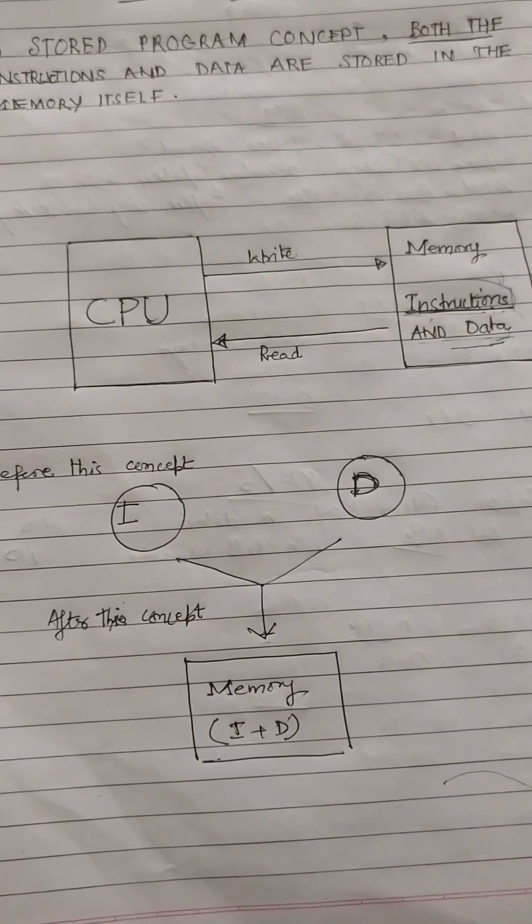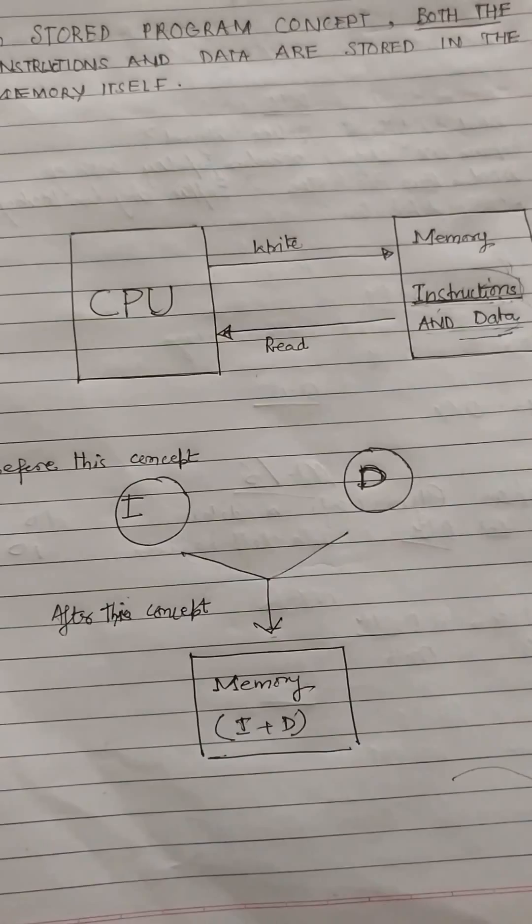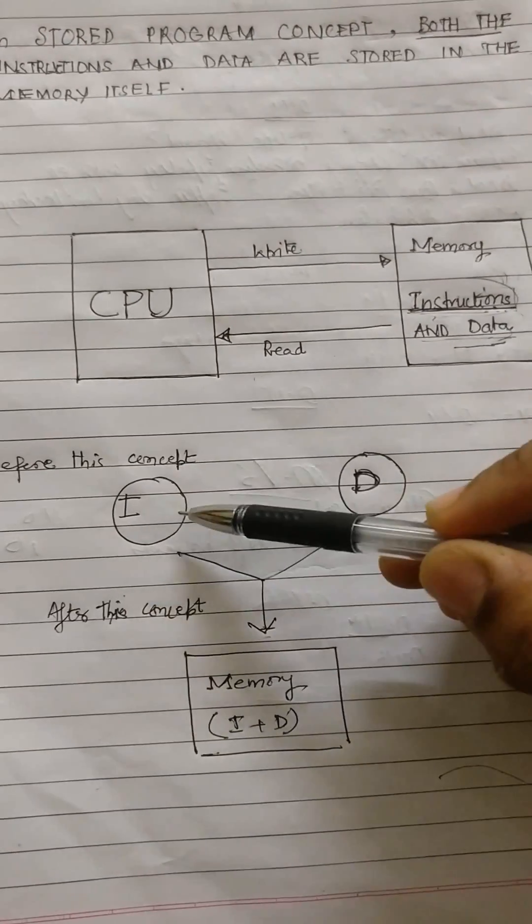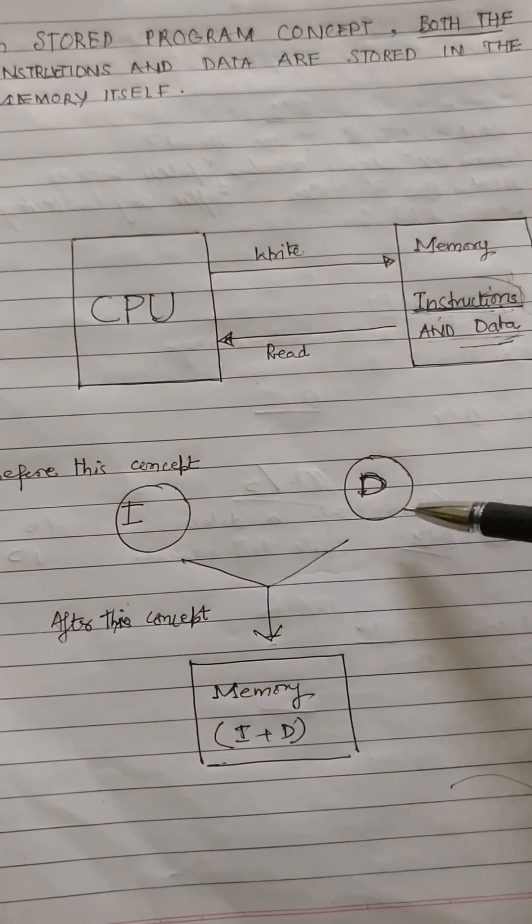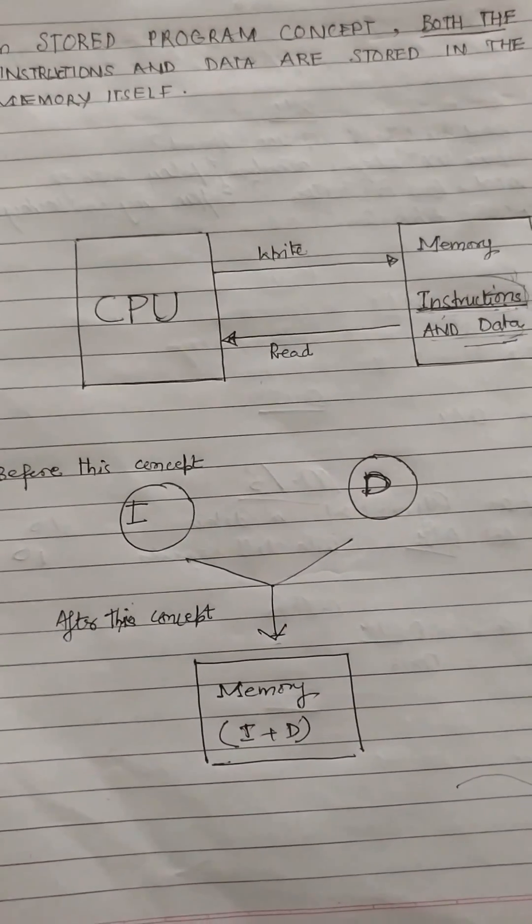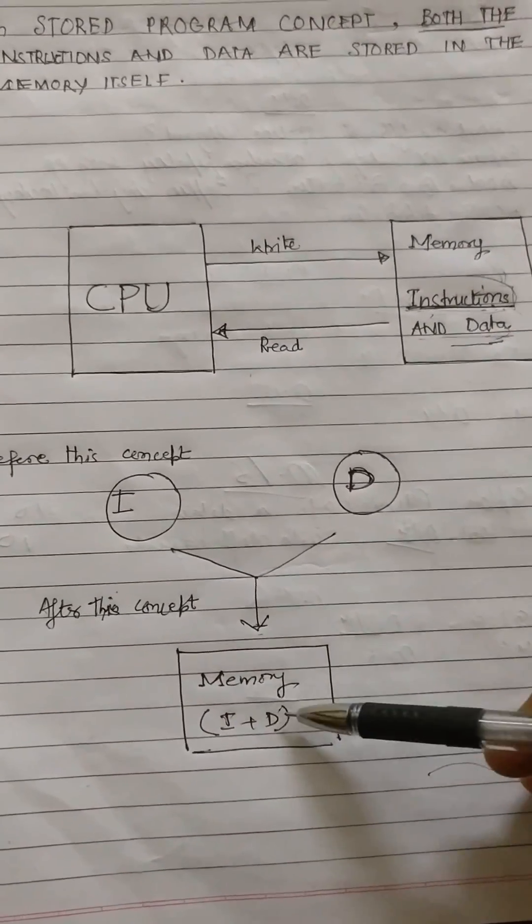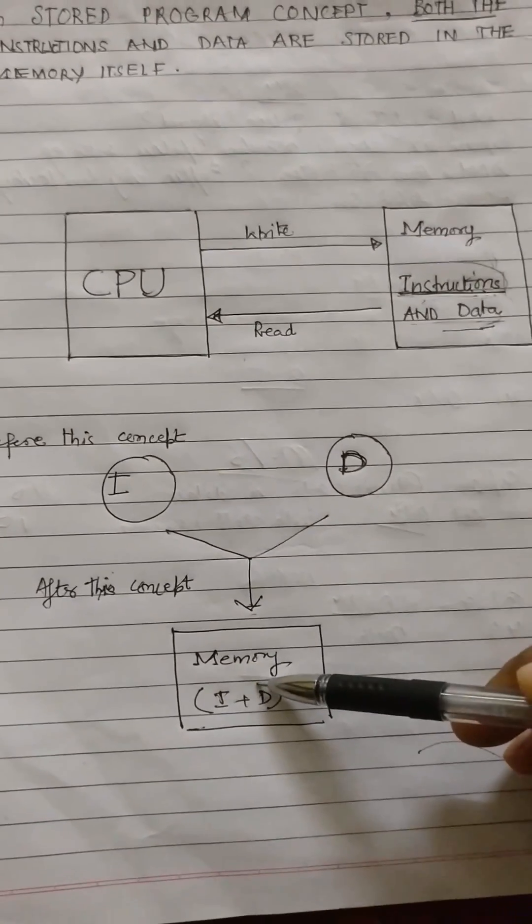Before this concept, it was believed that the instructions and the data were two separate entities. But after this concept, it was assured that memory contains instructions as well as the data. Instructions operate on this data.